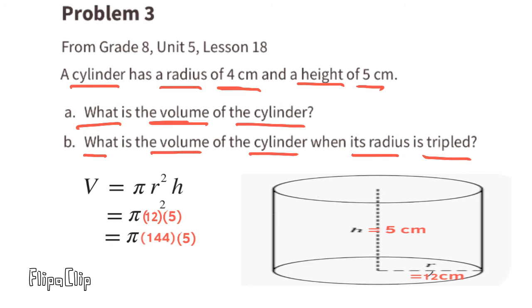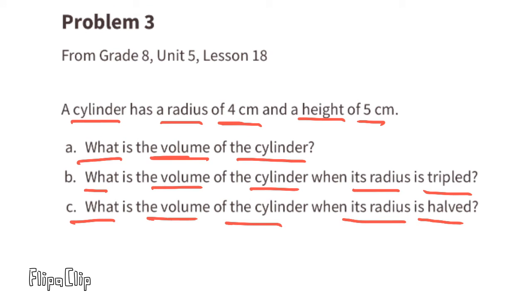Part c: What is the volume of the cylinder when its radius is halved? That means its radius would be cut in half. Half of 4 centimeters is 2 centimeters, so we can substitute the r with a 2.